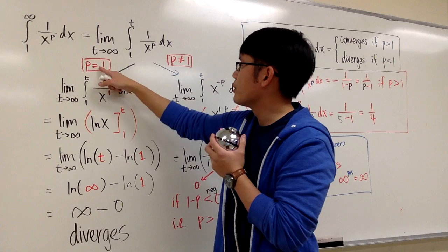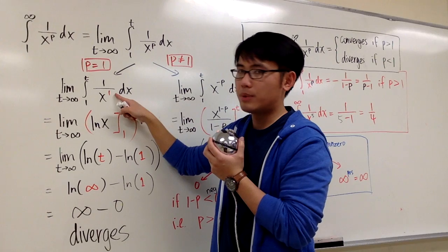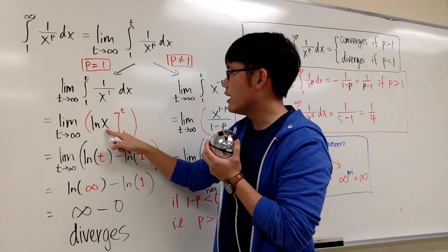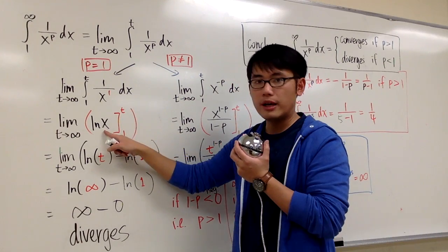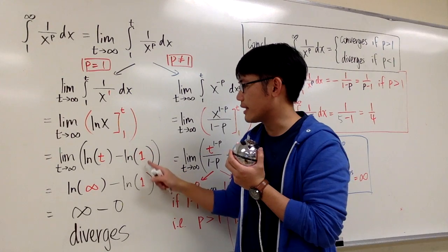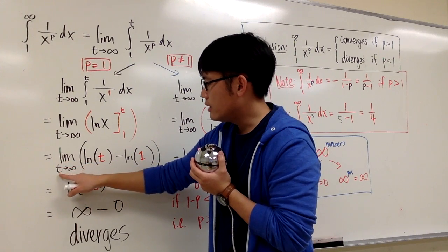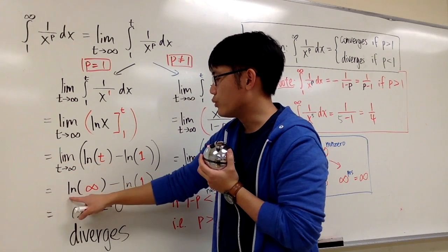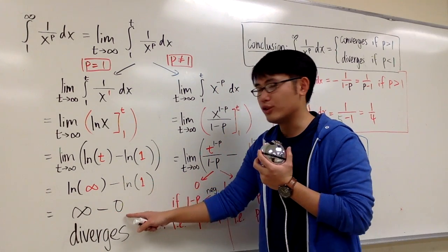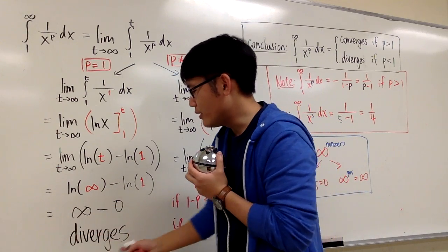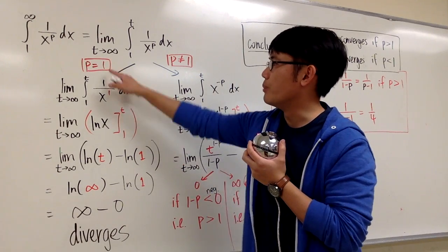When p equals 1, we have the integral of 1 over x, whose antiderivative is ln x. With limits from 1 to t, we plug in t and subtract the value at 1. Taking the limit as t approaches infinity, ln t goes to infinity, and ln 1 is 0. So we get infinity minus 0, which is infinity — this diverges when p equals 1.